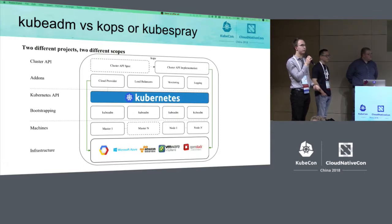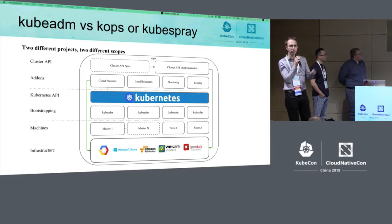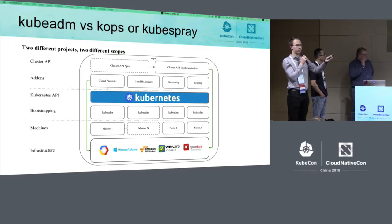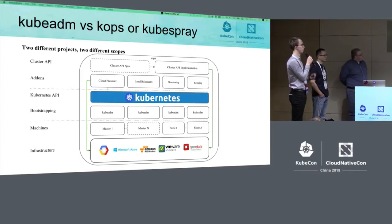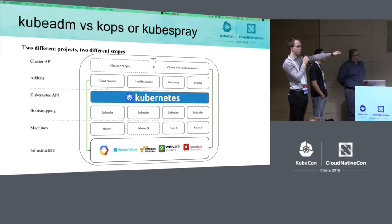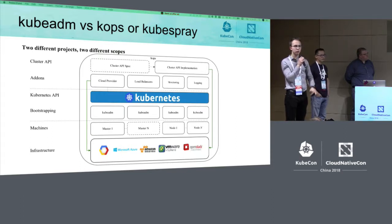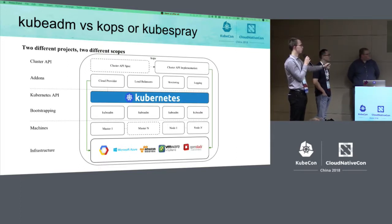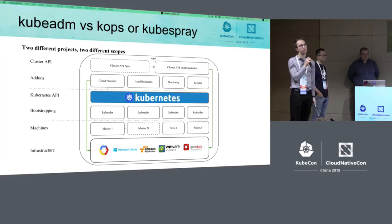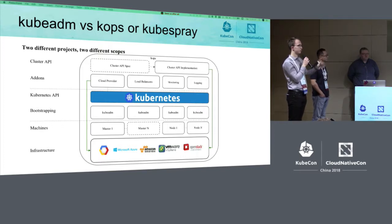You might wonder what is the difference between kubeadm and kops, GKE, AKS, or similar hosted Kubernetes solutions like kubespray. The difference is that kubeadm only sees the local master or node and Kubernetes — it manipulates local files on disk as well as the Kubernetes API, but nothing more. kops, kubespray, or a hosted provider solution cares about all the machines, all the infrastructure, all the bootstrapping processes, all the add-ons, load balancers, monitoring — everything. So it has a more global scope. kubeadm is a community tool to create clusters that you can use in your full provider solutions.